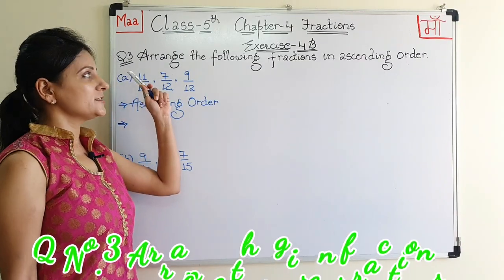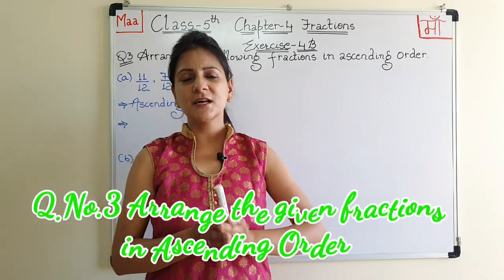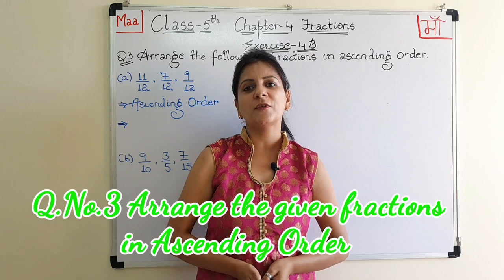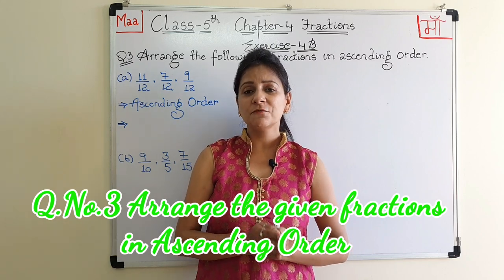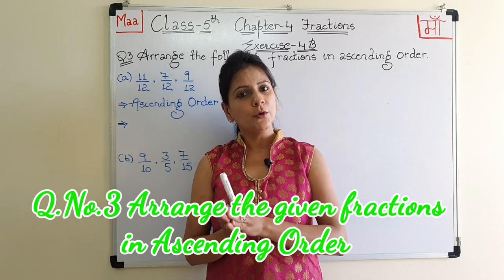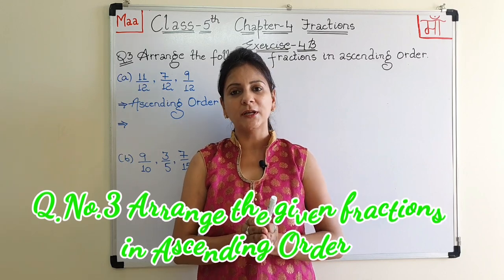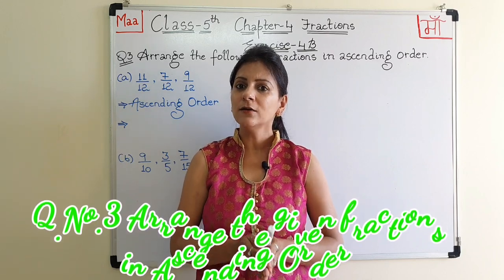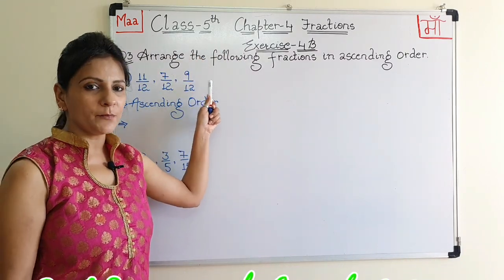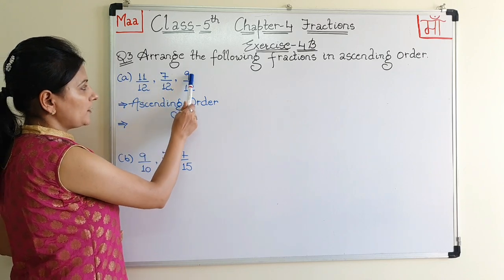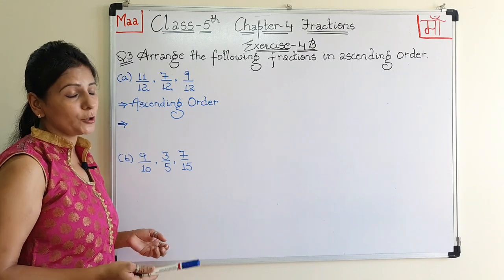Question number three is: arrange the following fractions in ascending order. Some fractional numbers are given and it is asked to arrange those fractional numbers in ascending order. Ascending means to arrange the values from smaller to greater — from smallest to greatest value. That particular order is called ascending order. In this question, three sets of fractional numbers are given: 11 upon 12, 7 upon 12, and 9 upon 12, and it is asked to arrange them in ascending order — smaller to bigger.